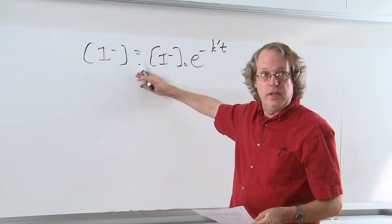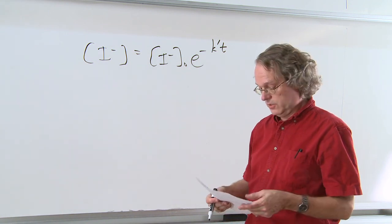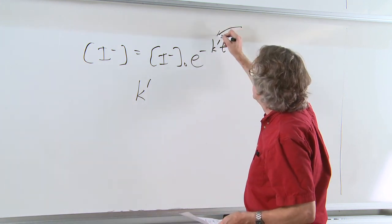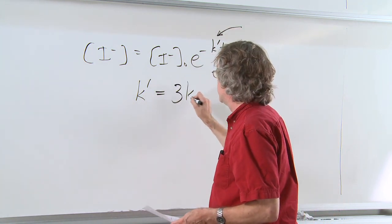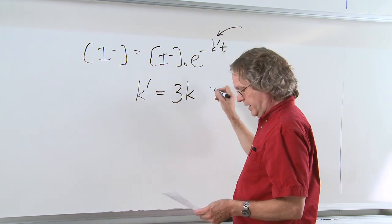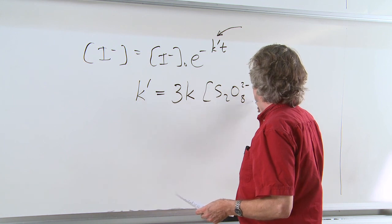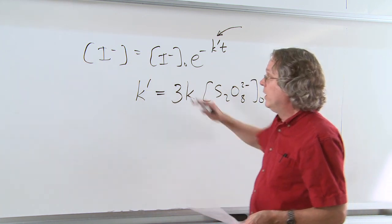So this is the equation we found in the limit where we've kept this S2O8 2- minus concentration very high and this effective rate constant, K prime, is actually equal to, including the stoichiometry, three times the real rate constant times the S2O8 2- minus concentration that we set in excess.